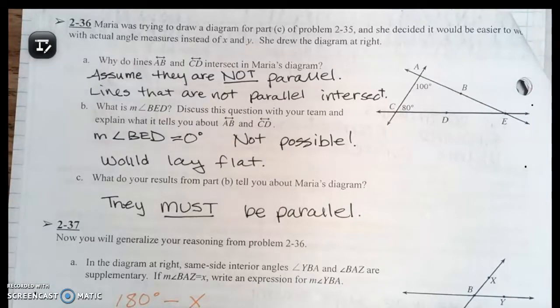Part A says why do lines AB and CD intersect in Maria's diagram? Assume that they are not parallel. So lines that are not parallel, at some point they will intersect. Because the theorem says that the lines are parallel, you have to assume that they're not parallel to do proof by contradiction. You assume the opposite of what it says, so in this case the lines will intersect.